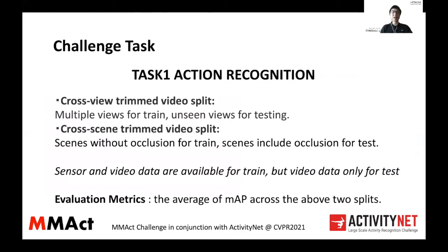We have two subtasks in our challenge. Task one is action recognition, a simple classification task. We provide two kinds of data splits: the first is cross-view trimmed video splits, which provide multiple views for training and unseen views for testing; we also have cross-scene trimmed video splits, which provide scenes without occlusion for training and scenes with occlusion for testing. We provide sensor and video data for the training phase, but only video data for the test phase. The average MAP across the two dataset types is used as our evaluation metric.